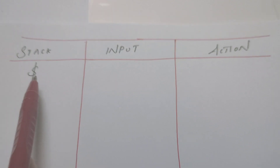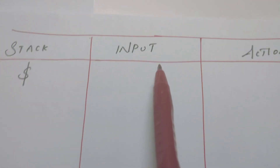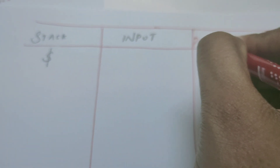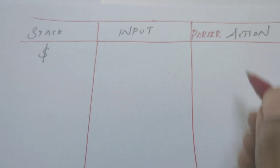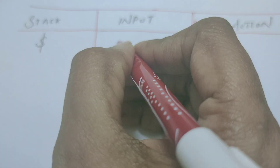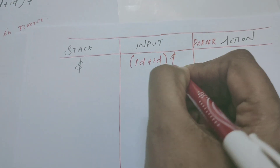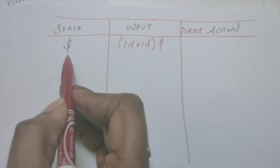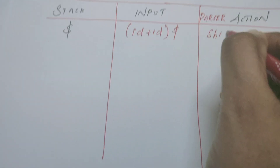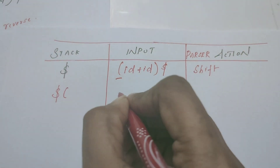The table shows three columns: stack contents, input buffer contents, and parser action. The four possible actions are shift, reduce, accept, or error. Initially the stack is empty (marked by dollar) and the input buffer contains (ID + ID)$. The first action is shift — the open parenthesis is shifted onto the stack.